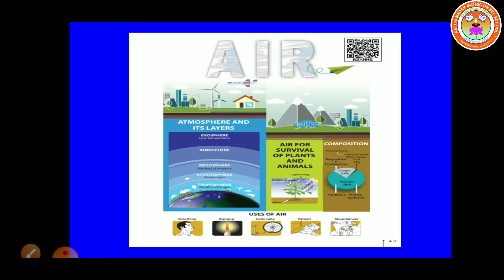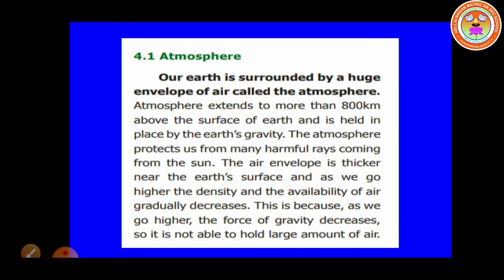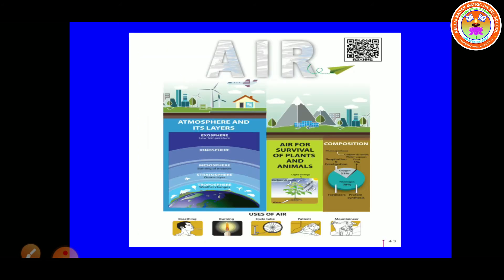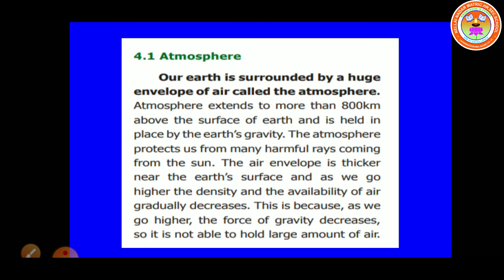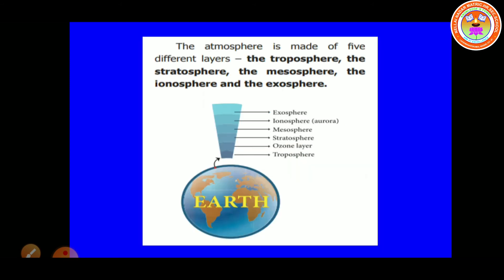And students, our Earth is also surrounded by a huge envelope of air called the atmosphere. Our atmosphere extends to more than 800 km above the surface of Earth. The atmosphere protects us from many harmful rays coming from the sun. The air envelope is thicker near the Earth's surface, and as we go higher, the density and availability of air gradually decreases. This is because as we go higher, the force of gravity decreases, so it is not able to hold a large amount of air.